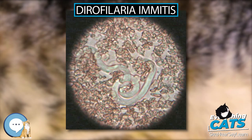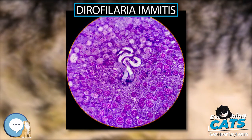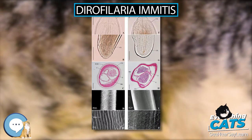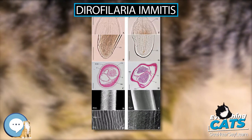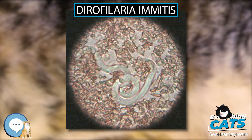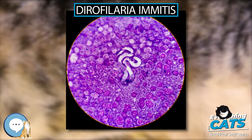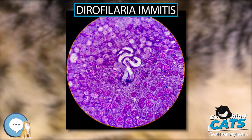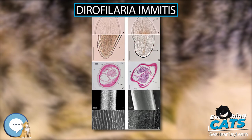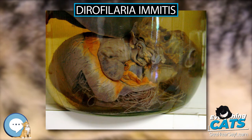Heartworms go through several life stages before they become adults infecting the pulmonary artery of the host animal. The worms require the mosquito as an intermediate host to complete their life cycles. The rate of development in the mosquito is temperature-dependent, requiring about two weeks at or above 27 degrees Celsius (80°F). Below a threshold of 14 degrees Celsius (57°F), development cannot occur and the cycle is halted. As a result, transmission is limited to warm weather, and the duration of the transmission season varies geographically.